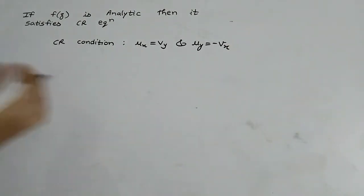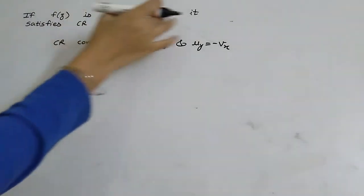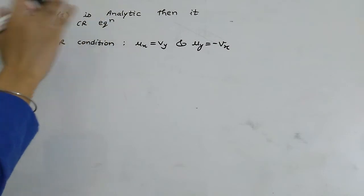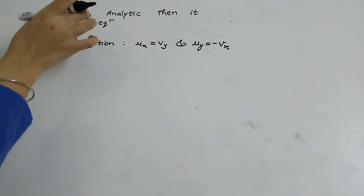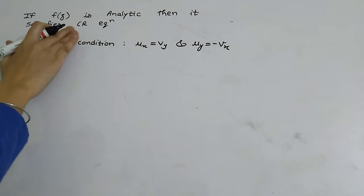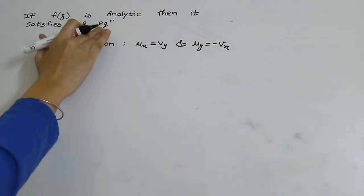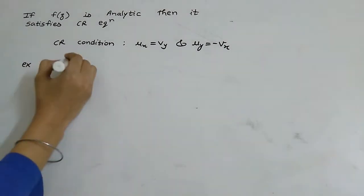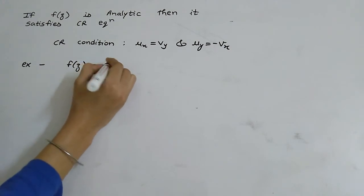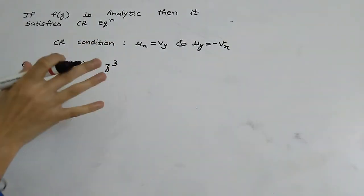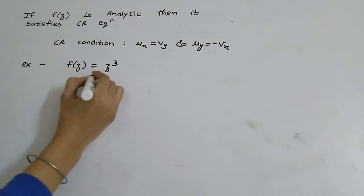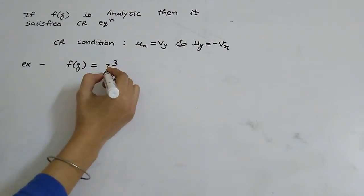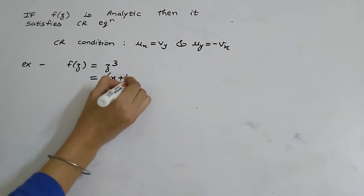Note that the CR equation is a necessary condition, not a sufficient one — if some function satisfies the CR equation, we can't say that f(z) will be analytic. Now we will see one example: f(z) = z³, where z is a complex number, so we can write it as (x + iy)³.